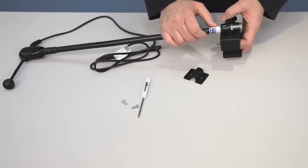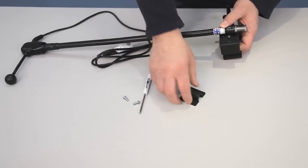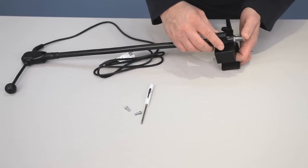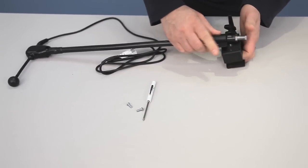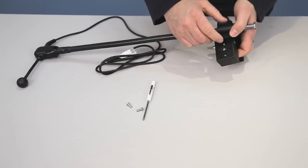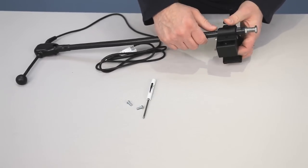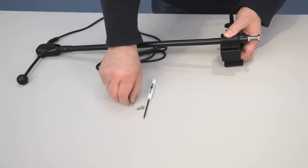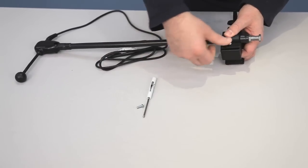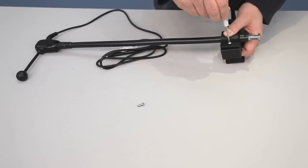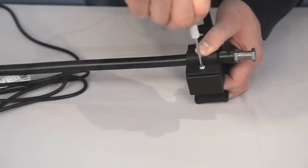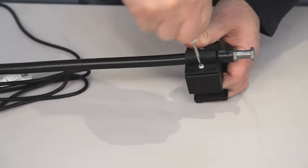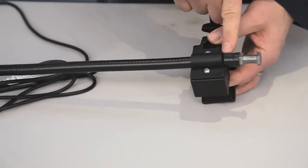The way that's done is this bracket fits over the end of the gooseneck. It snaps in place, and there are two threaded inserts here for you to attach this with included mounting screws. There are two Phillips head screws.